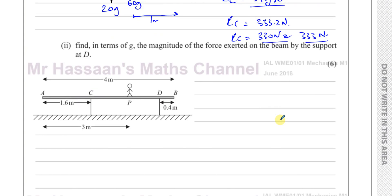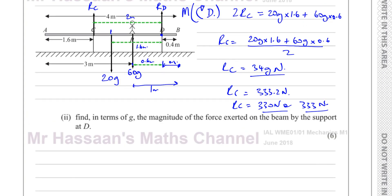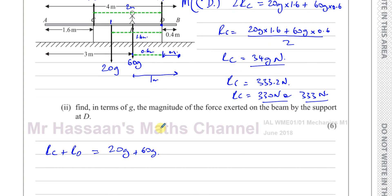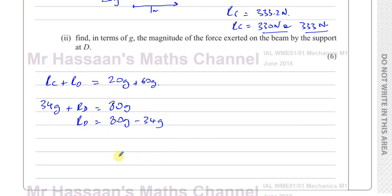Now we need to find the reaction force at D. The easiest way is to use the equilibrium condition: since this is equilibrium, Rc plus Rd must balance the total downward force. Rc + Rd equals 20g + 60g = 80g. I already know Rc is 34g, so I can find Rd directly.